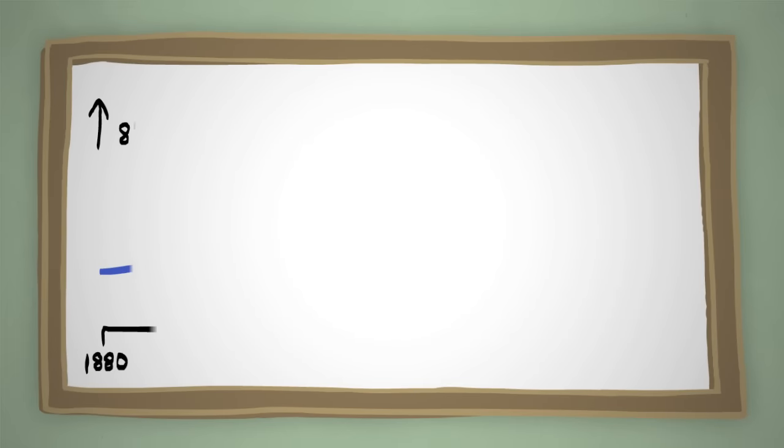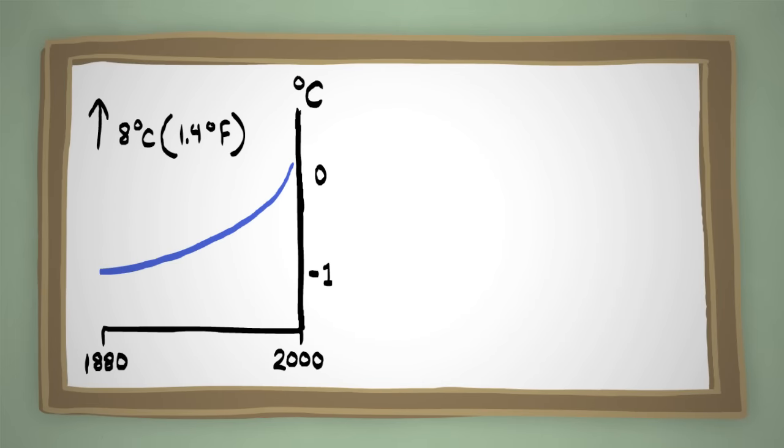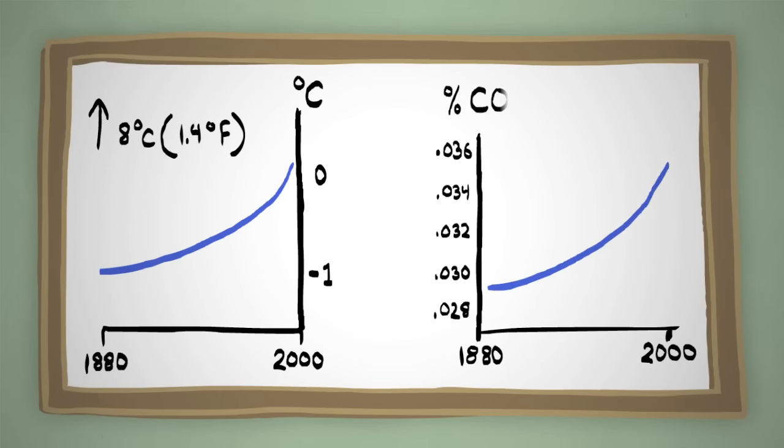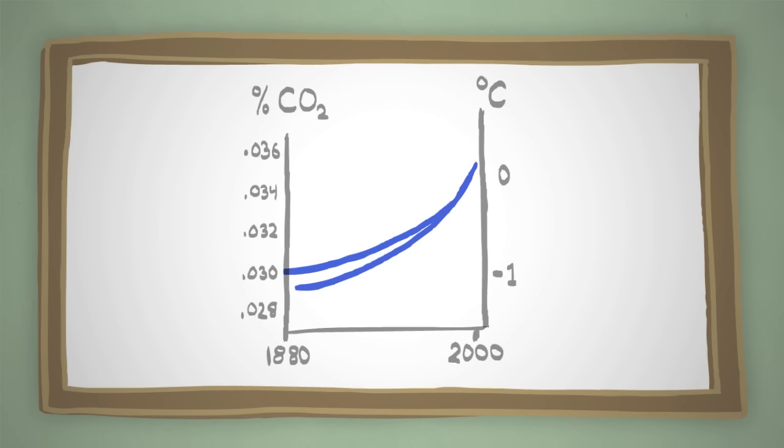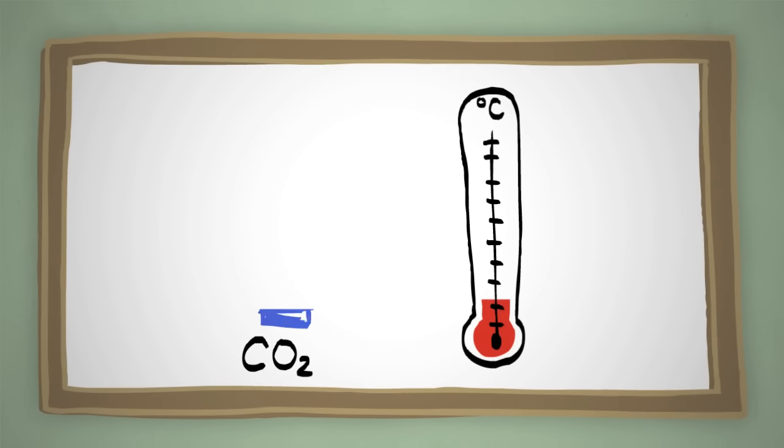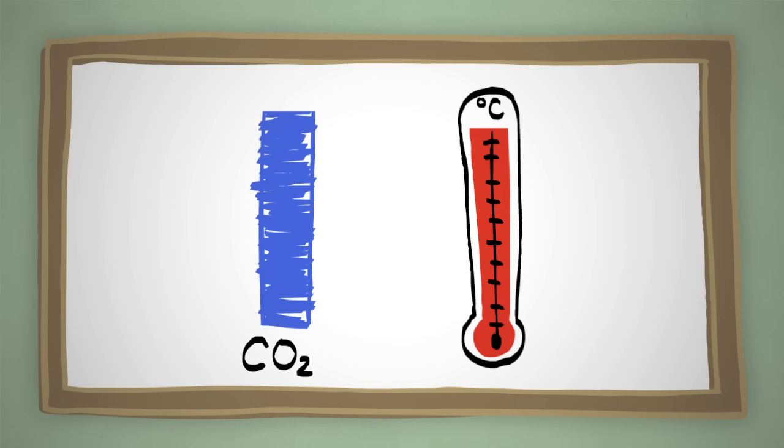Remember that graph of average temperature rise since 1880? Check out this graph of carbon dioxide levels in the atmosphere since 1880. Now let's look at them both. See how they're rising together? That's because, as carbon dioxide goes up, the temperature does too. They're directly connected.